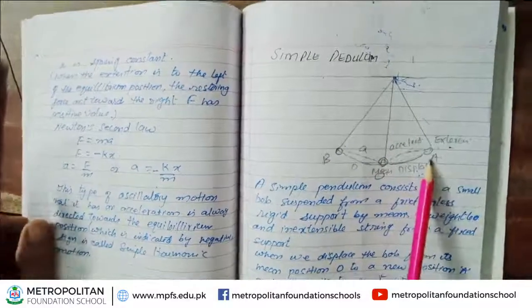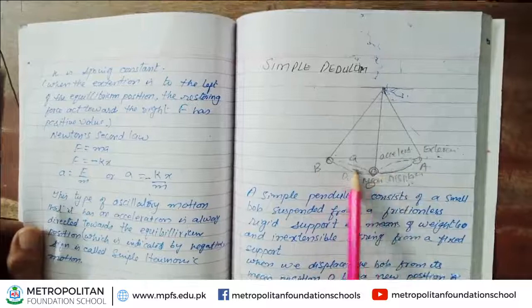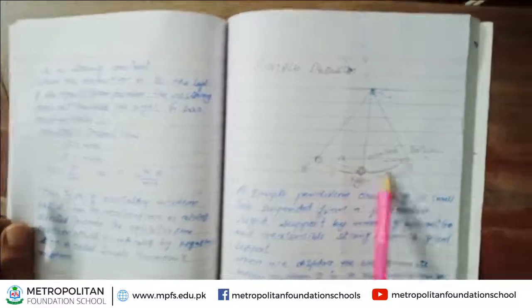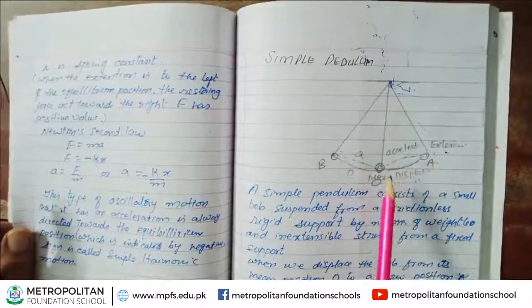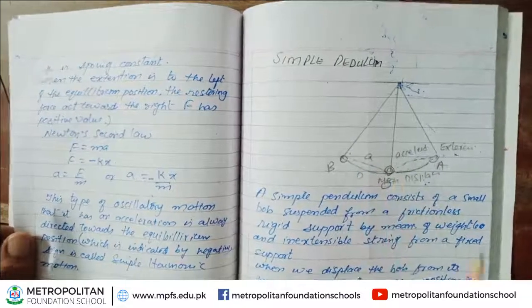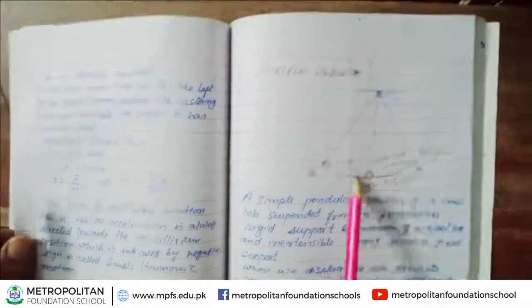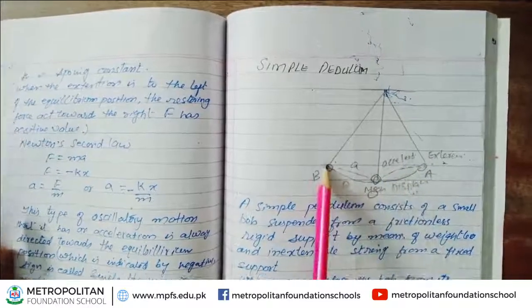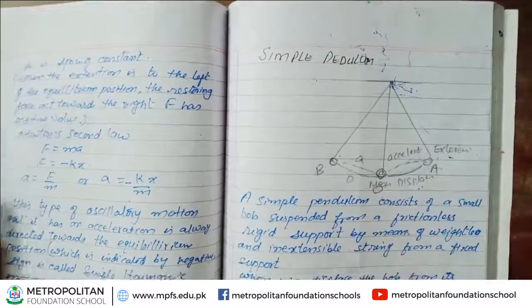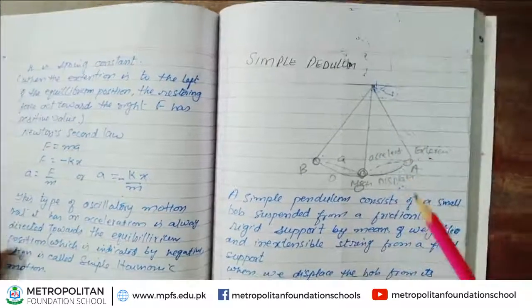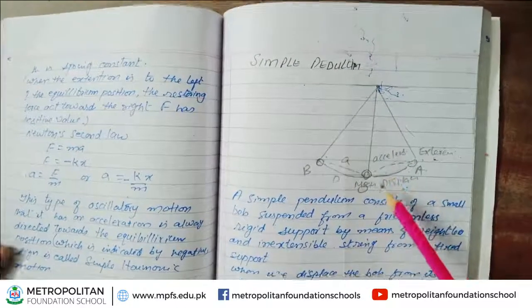The number of vibrations per unit time is called frequency, which is denoted by f.